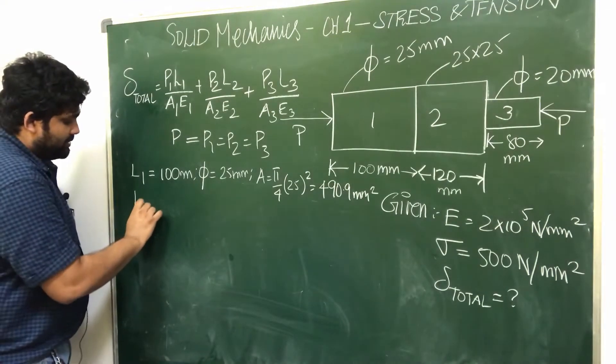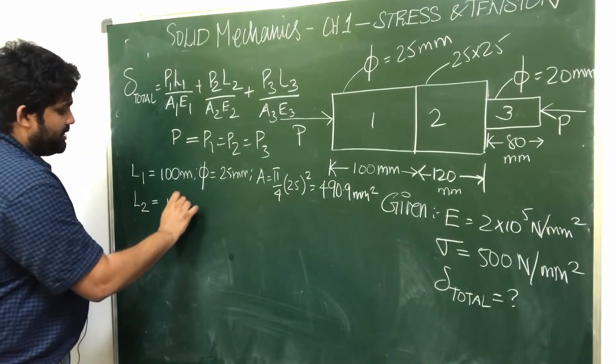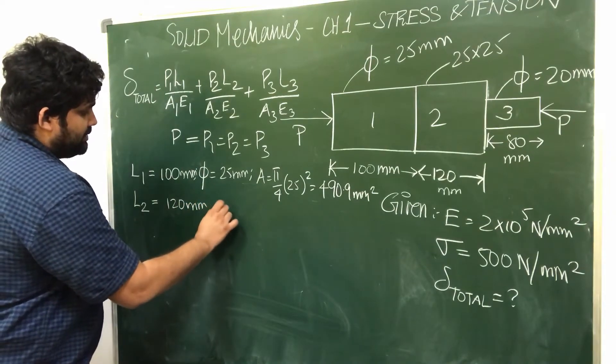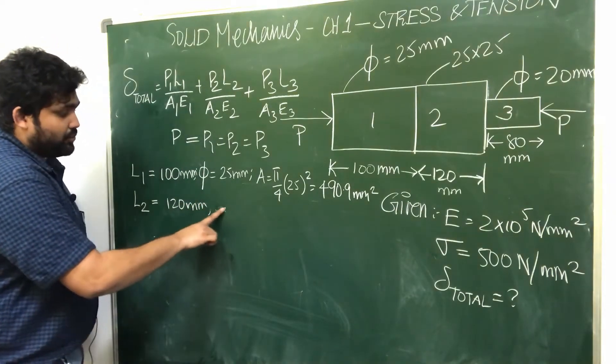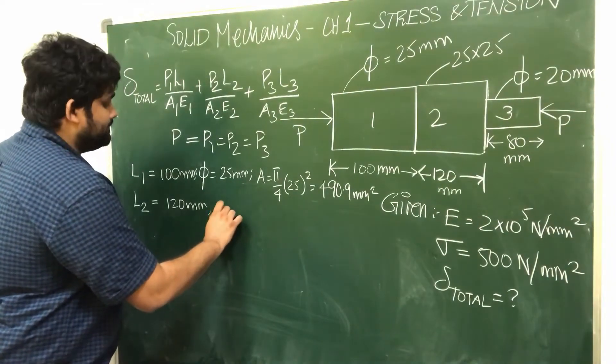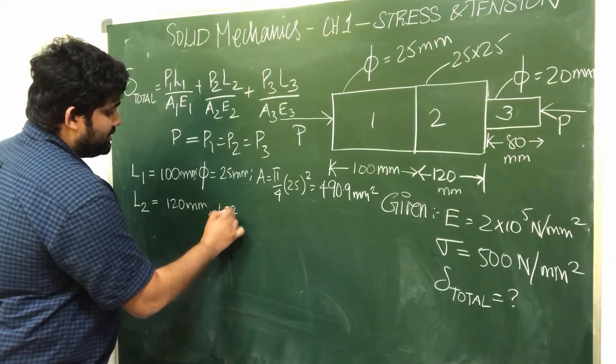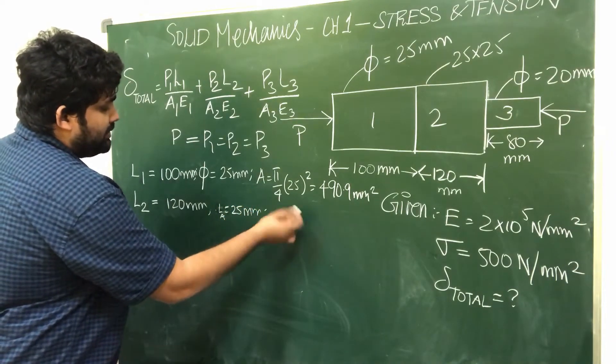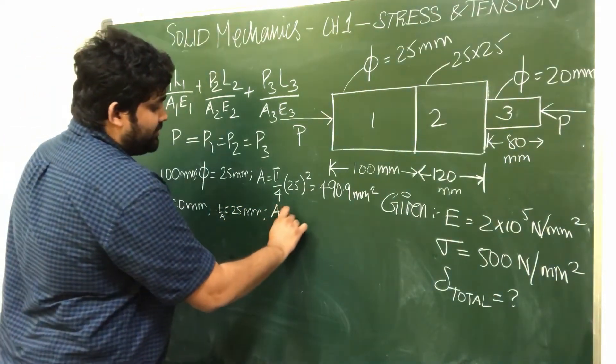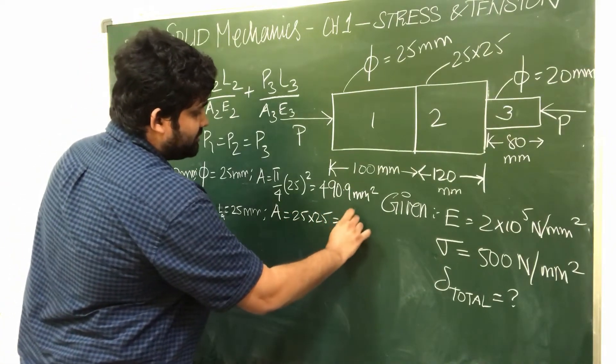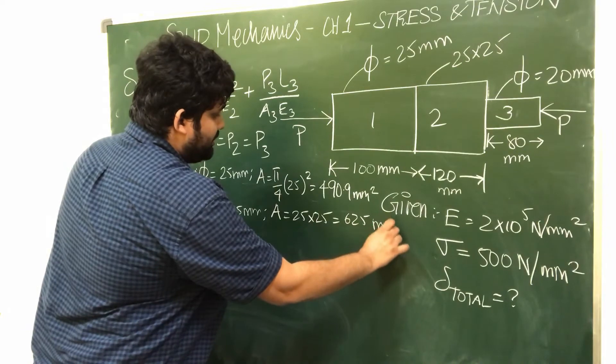Bar 2: length 120 mm, not circular but square cross section. So length 25 mm, area of cross section is 25 into 25, so this is 625 mm^2.